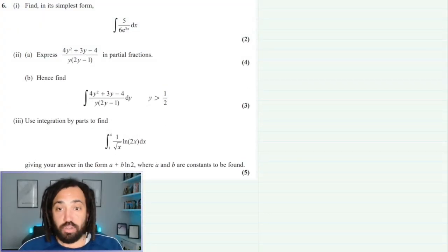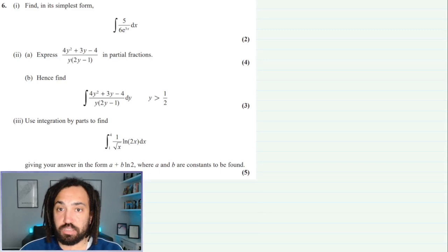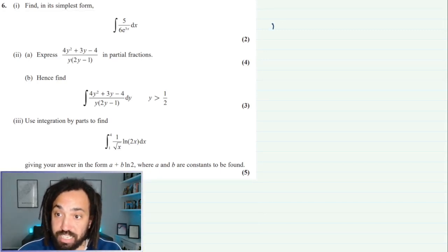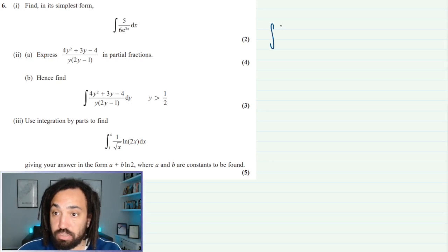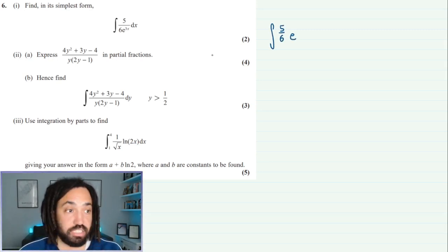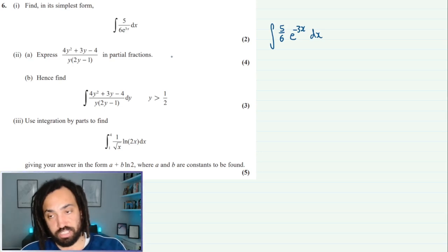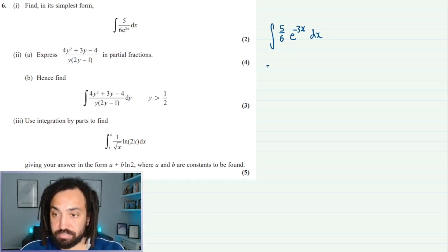Okay, right, let's get into it. So first one is part A. There's no technique really needed here, it's just a straightforward integral. I need to write it in a way where I can integrate it, so I have 5 over 6 is the constant and this will be e to the minus 3x because the e to the 3x is on the bottom, so we can bring it to the top and just change the power to a negative.